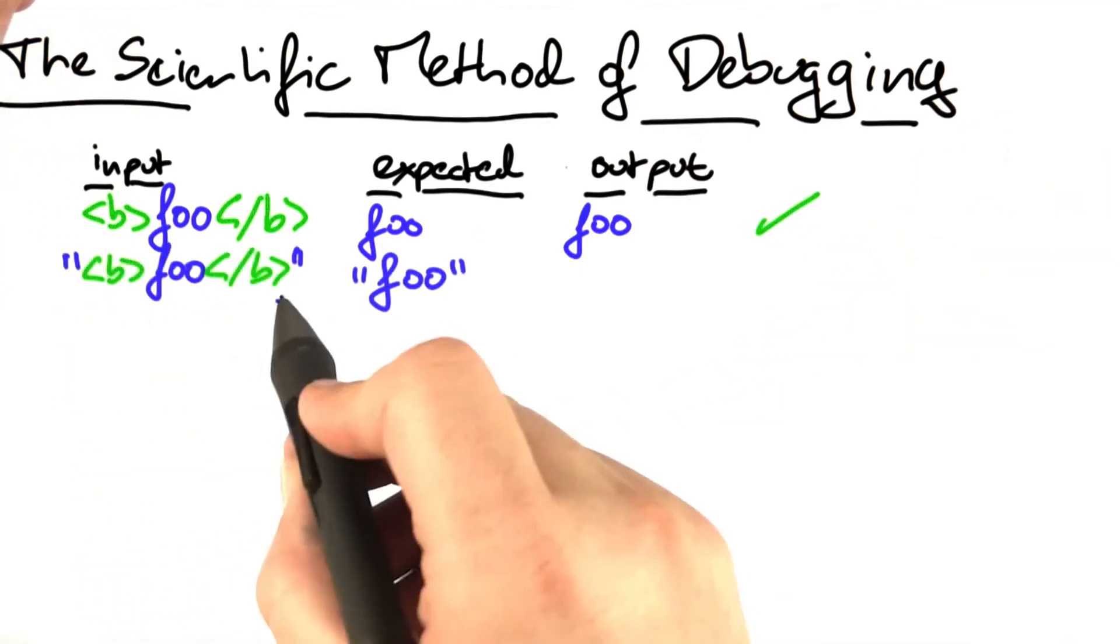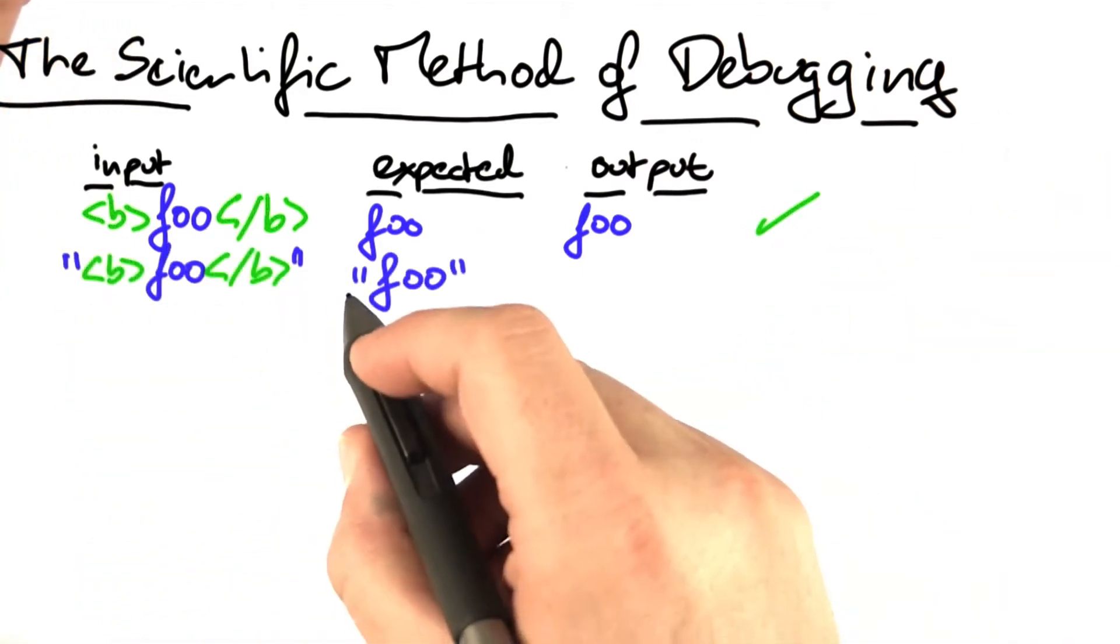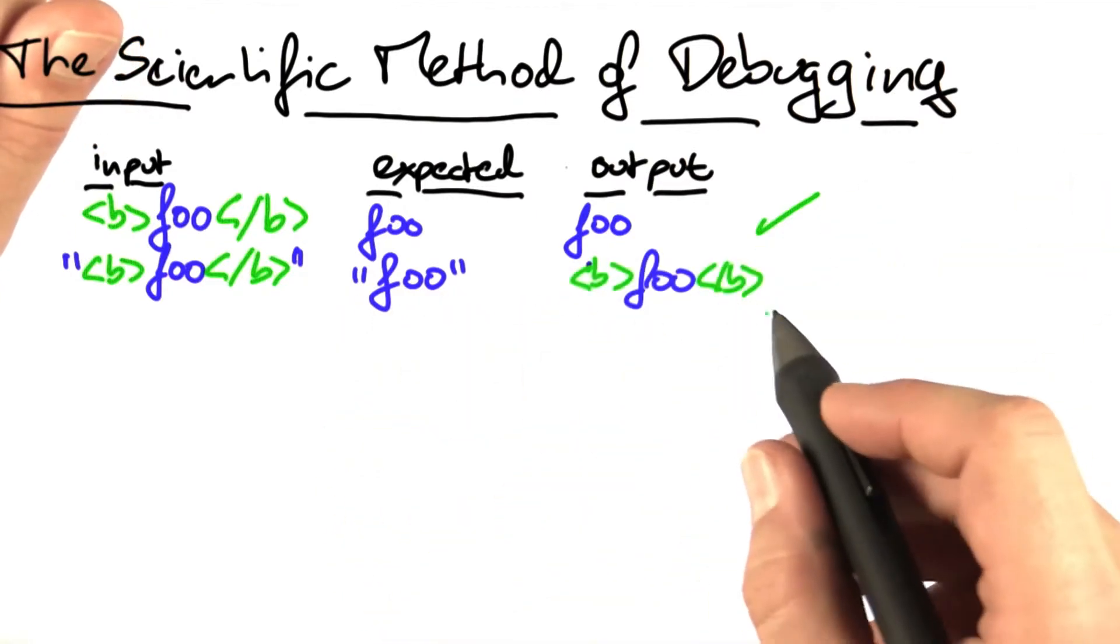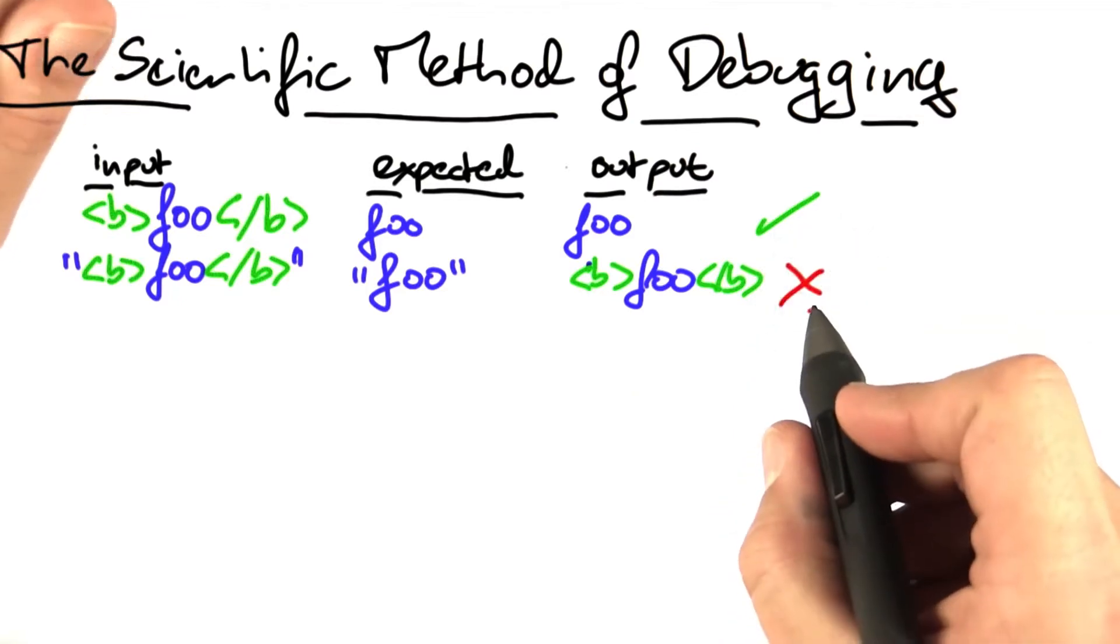If our input was the same thing in double quotes, we would expect the double quotes also to appear in the output, but instead we get the HTML markup still included in the output. That is, the whole thing fails.